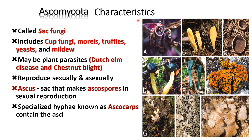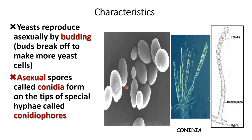Ascomycota, also called sac fungi, include cup fungi, morels, truffles, yeast, and mildew. Most species are plant parasites. Reproduction is both sexual and asexual. The ascus is the sac that makes ascospores in sexual reproduction. Specialized hyphae known as ascocarps contain asci. Yeast reproduces asexually by budding, where the bud breaks off to make more yeast. Asexual spores called conidia form on the tips of special hyphae called conidiophores.